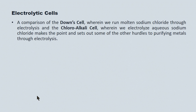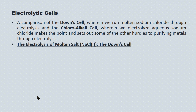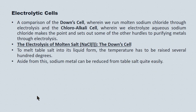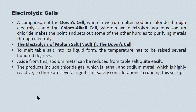The example we'll look at is the down cell. The down cell involves reducing sodium from liquid sodium chloride — the electrolysis of molten salt. The melting point of table salt is extremely high for an ionic crystal lattice; we're running this above 800 degrees Celsius. Aside from this high temperature, the chemical process is straightforward. The products include chlorine gas (Cl₂), which is lethal and requires careful handling, and sodium metal, which is highly reactive — so there are several significant safety considerations in running this setup.